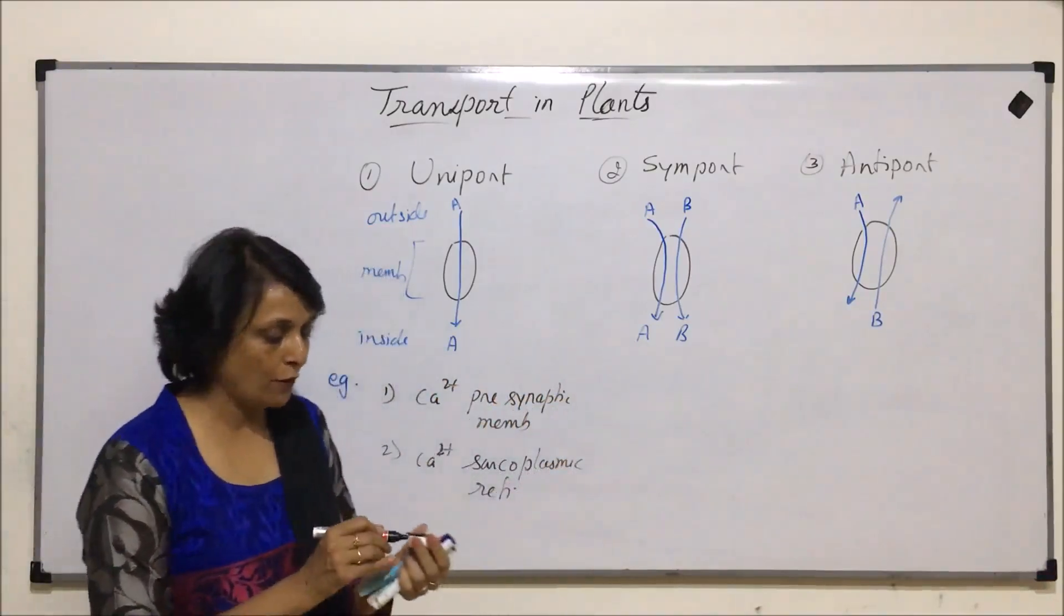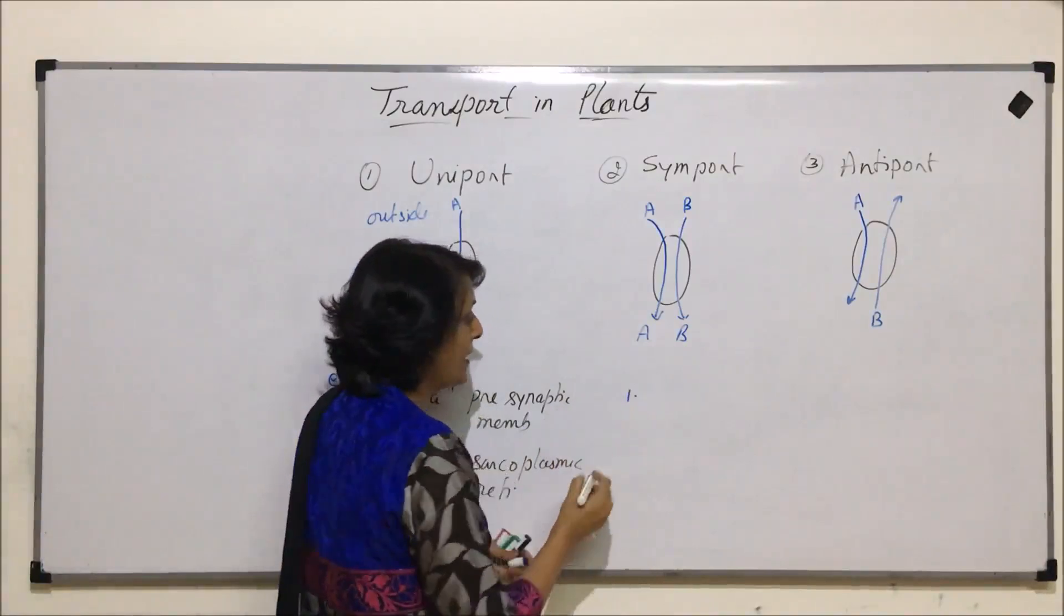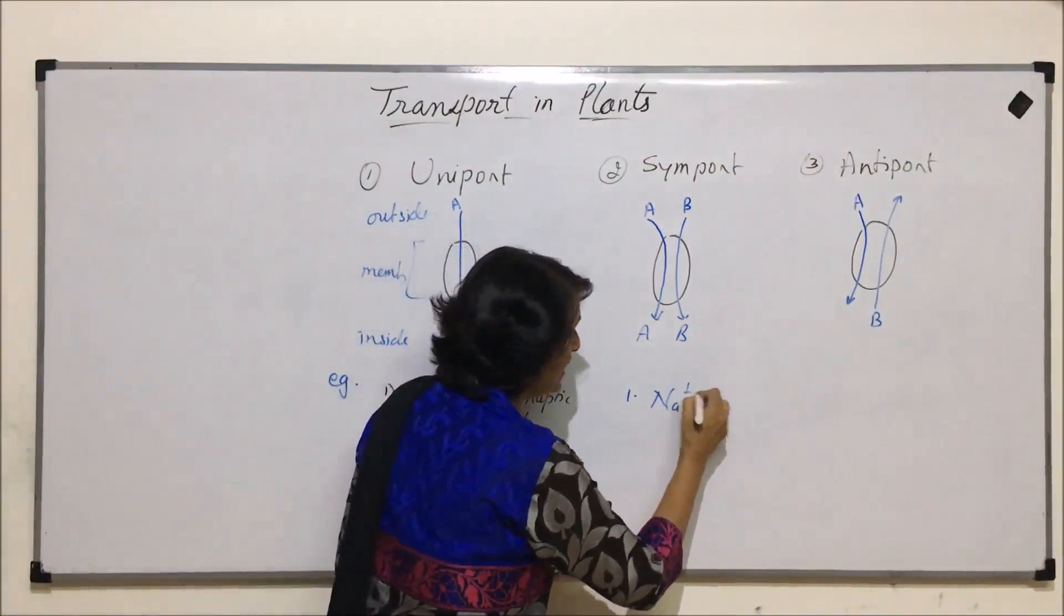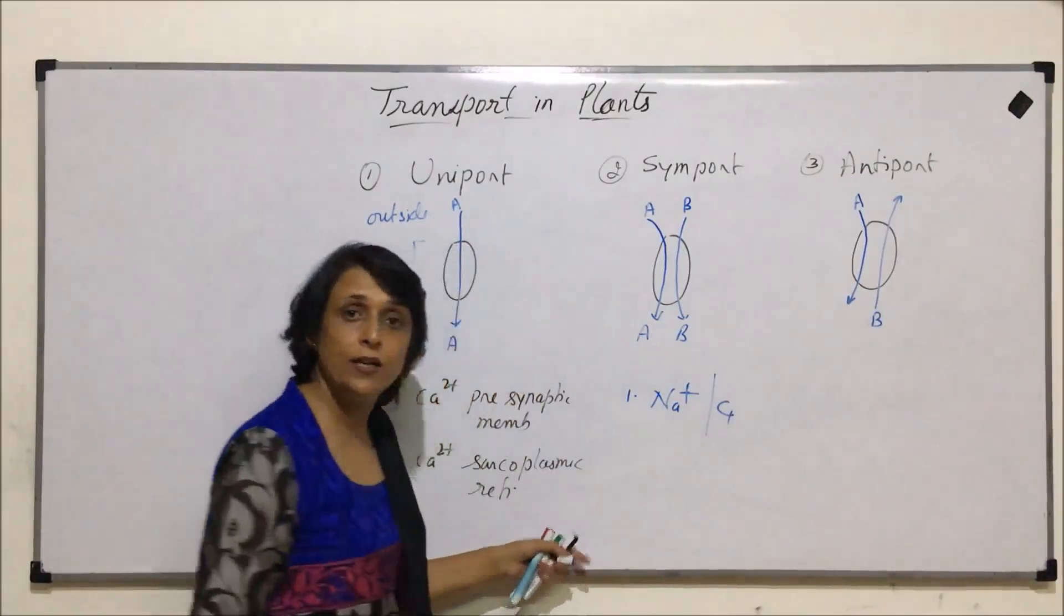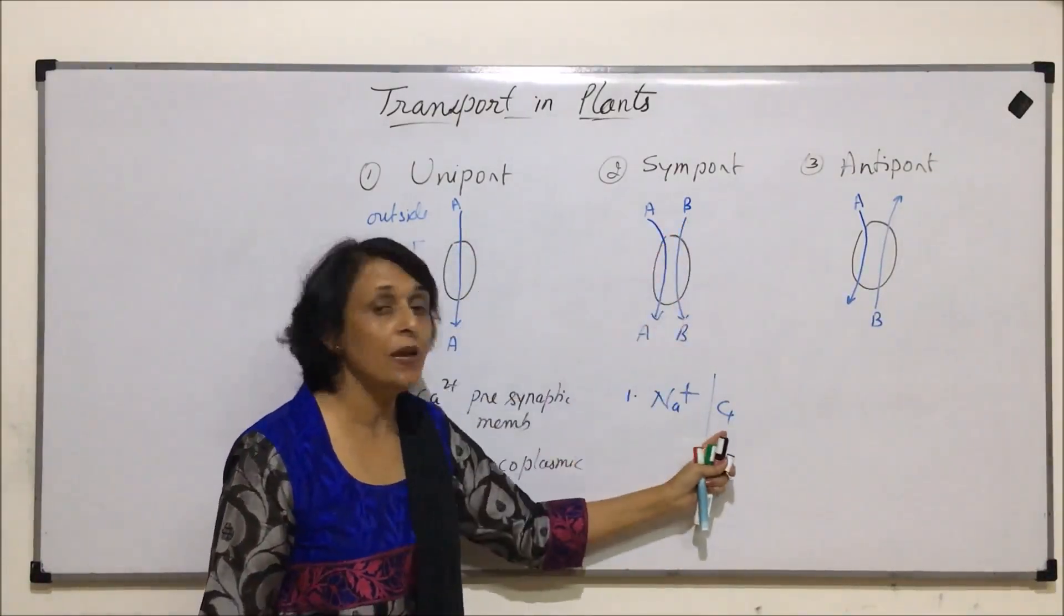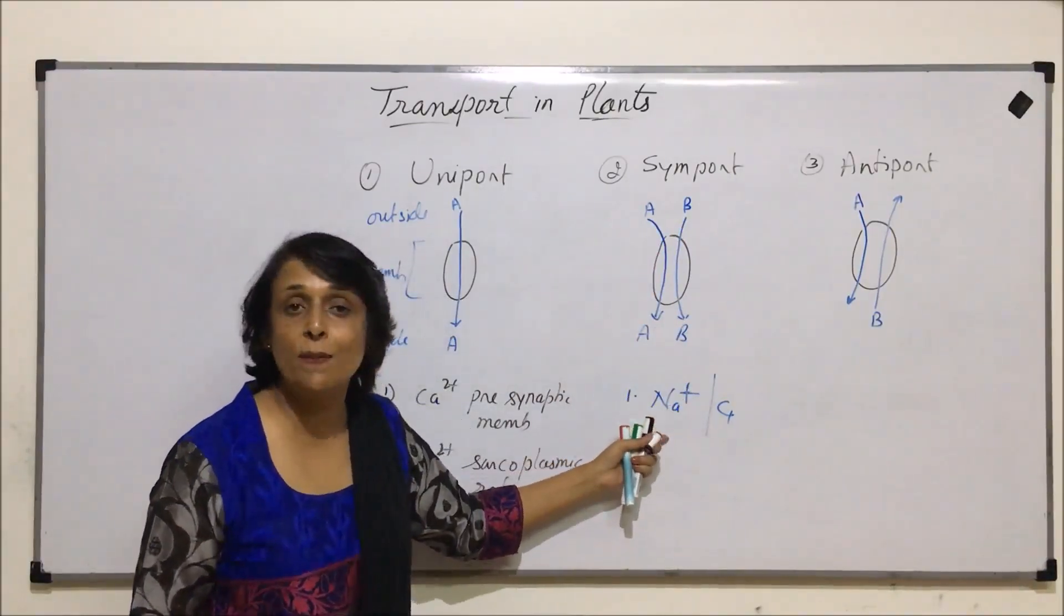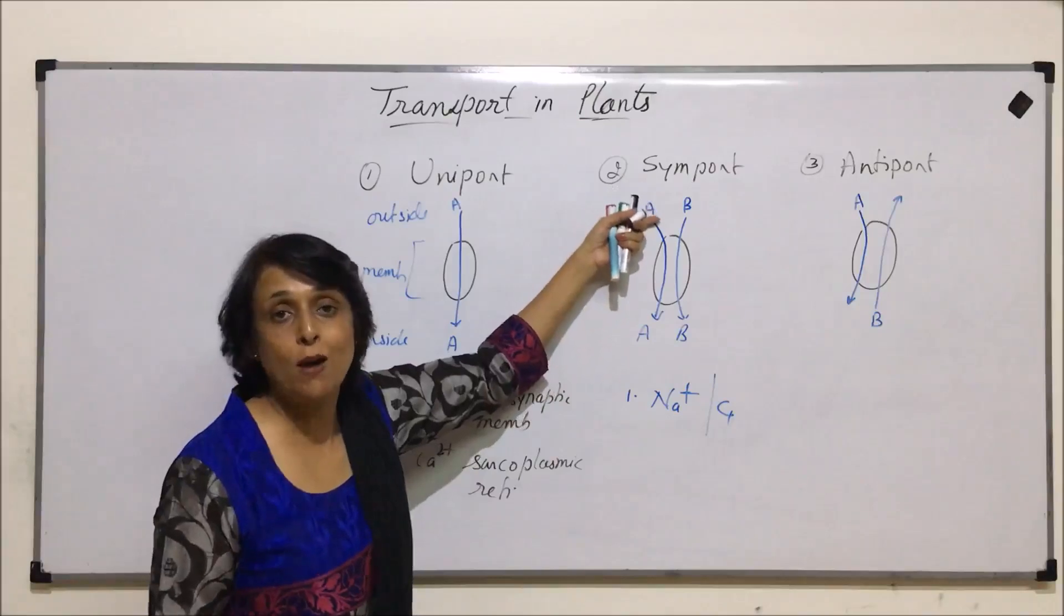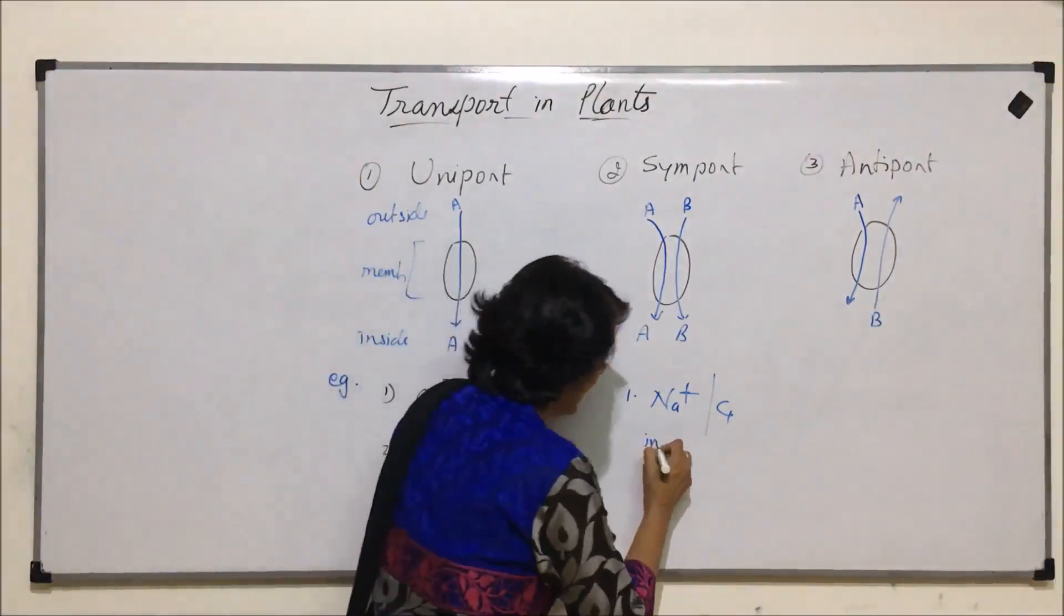The example of symport can be seen in intestine during absorption. Here one example is when sodium ions and glucose, they get transported together. So A can be sodium ion and B can be glucose. Glucose is taken in with the help of these sodium ions. Both are moving from outside into the cell and this is seen in intestine.